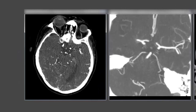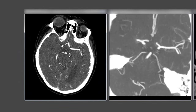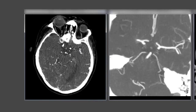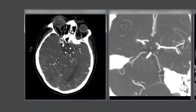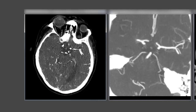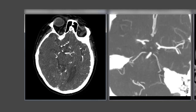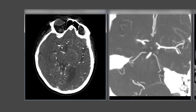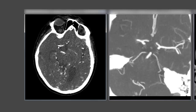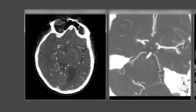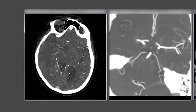Scrolling on our source images, we see the normal left MCA here with a nice MCA bifurcation. Looking at the opposite right side, we see a hard stop — a large artery occlusion in the right MCA stem — in this patient presenting with left hemiparesis, neglect, and gaze deviation to the right.